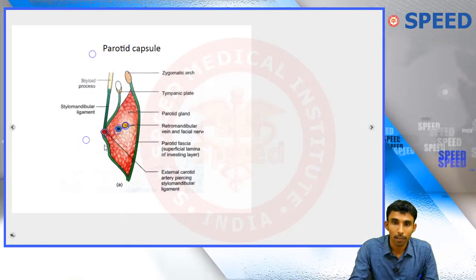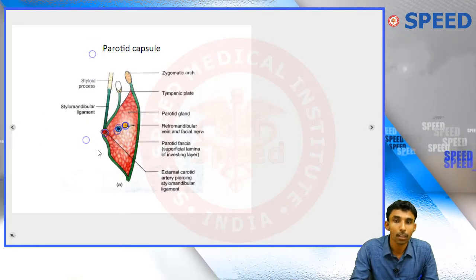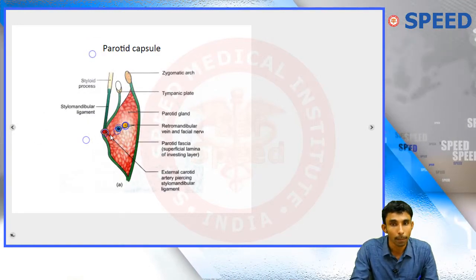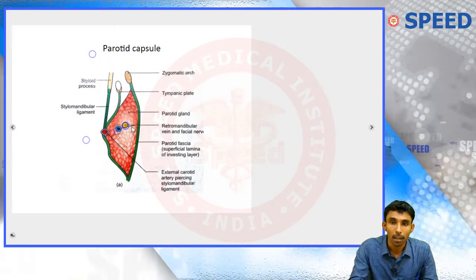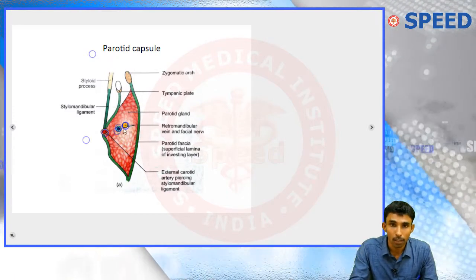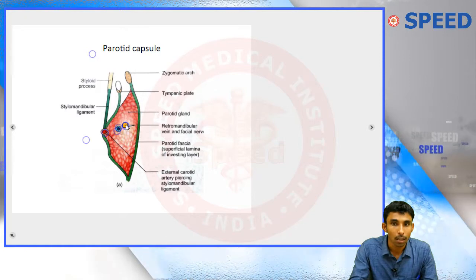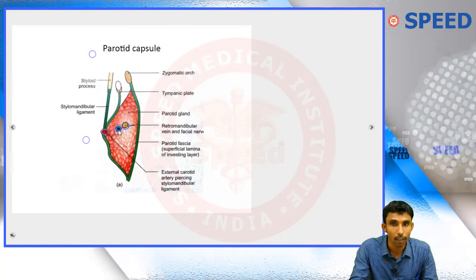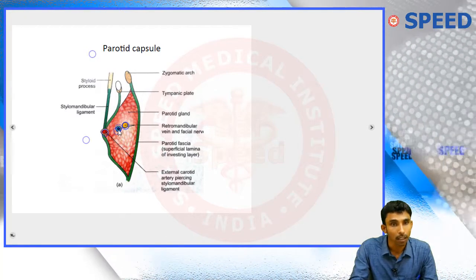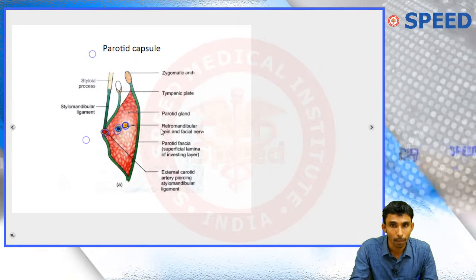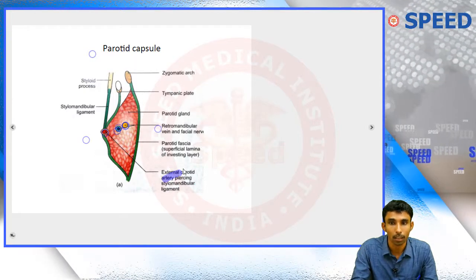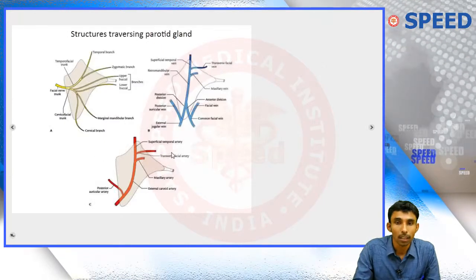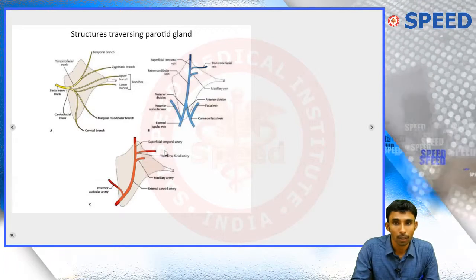To recap, the three structures traversing the parotid gland from superficial to deep are: the facial nerve, the retromandibular vein, and the external carotid artery. These are the three structures passing through the parotid gland.